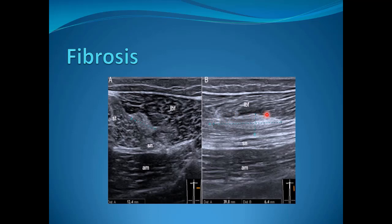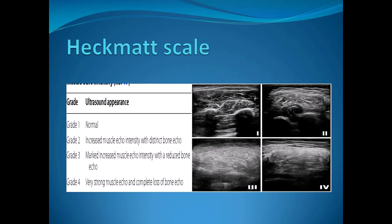Fibrosis is seen as an echogenic lesion within the muscle fibers with a history of old insult. Calcifications can also be seen, as in the previous examples noted.